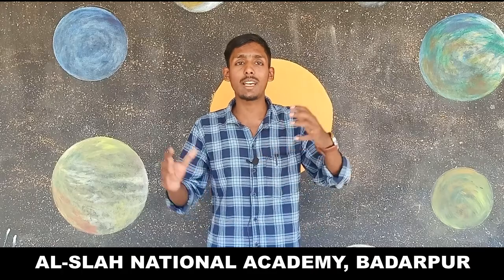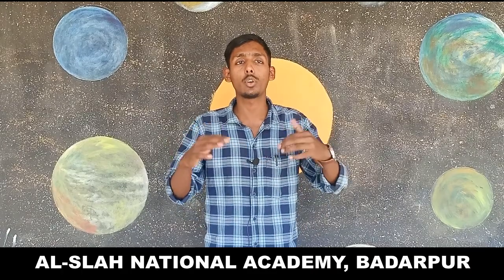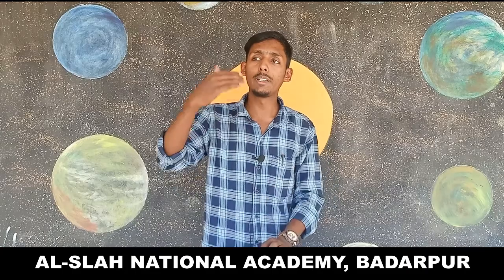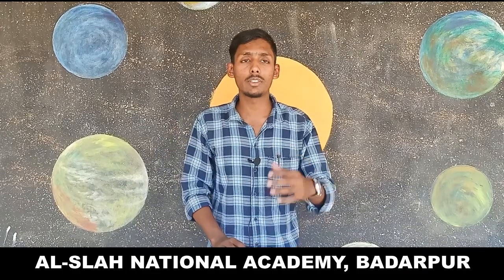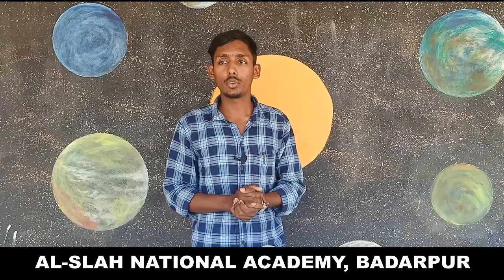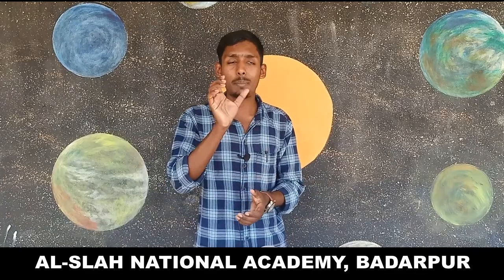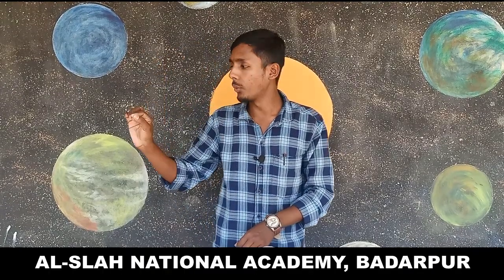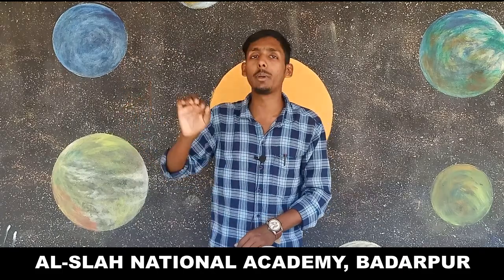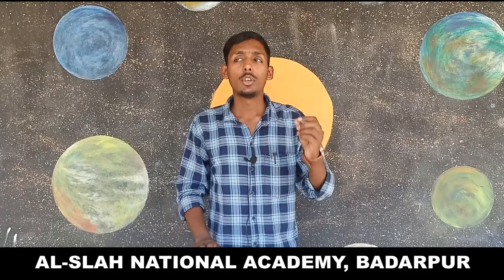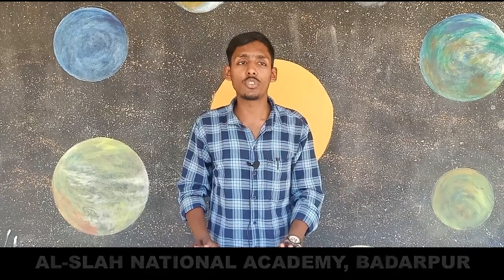Now, constellation. Constellation means the combination of two or more stars — say two, three, four or more stars combined together — that gives a structure. That structure is known as a constellation. For example, when seven stars are combined together, they give a shape or structure. Such a structure is known as Ursa Major.